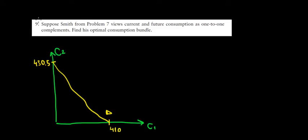Let's have a look at question 9 in this video. So suppose we view current and future consumption as one-to-one complements. What would be the optimal bundle now?